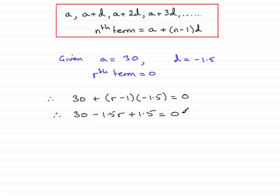So, if I rearrange this by adding 1.5r to both sides, and grouping together the 30 and the 1.5, I've got 31.5 equals 1.5r.